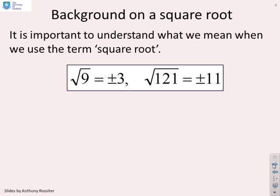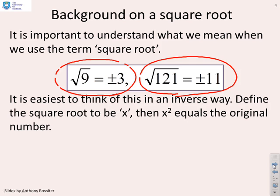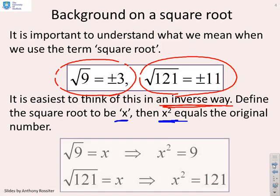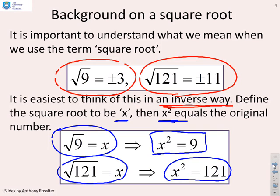So what about square roots? It's important you understand what we mean when we use the term square root. If I said what's the square root of 9, you'd probably write down plus or minus 3, or the square root of 121 is plus or minus 11. I think you need to think of this in an inverse way — it's a bit like inverse functions. Define the square root to be x, and x is the correct square root if x squared equals 9. So x is the square root of 121 if x squared equals 121. When you get asked to do a square root operation, use that inverse expression because it makes life a little bit easier.